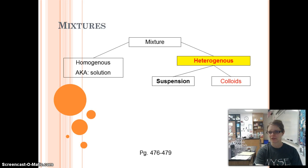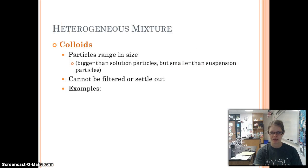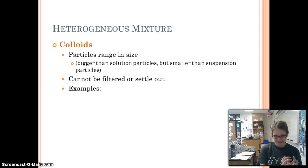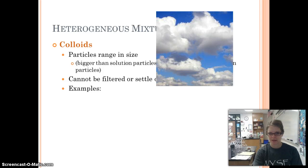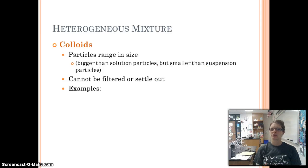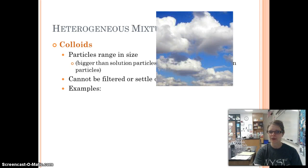Another type of heterogeneous mixture is a colloid. A colloid has particles that range in size. Homogeneous solutions have really tiny particles, suspensions are a little bigger, and colloids are even a little bigger than that. They can't be filtered or settle out. So although they have big particles, you still can't run them through filter paper, which seems funny until you look at some examples. Clouds are an example of colloids — they have large particles and kind of look the same everywhere, but really don't.